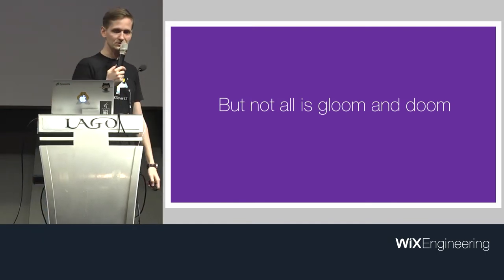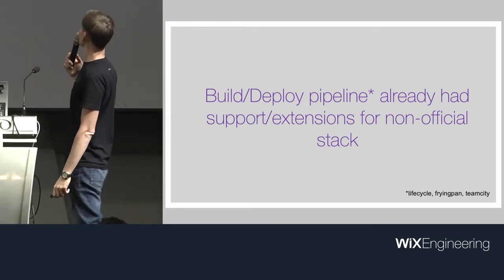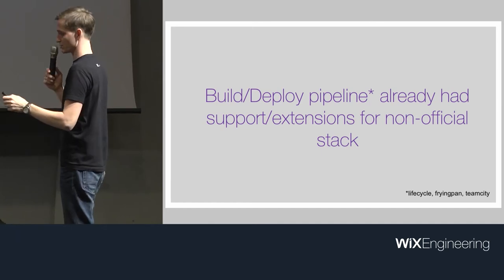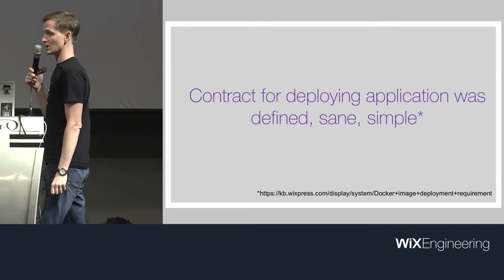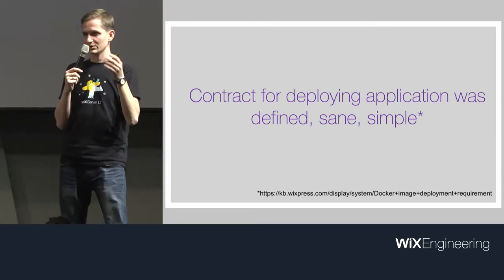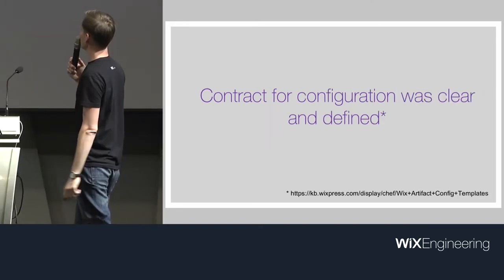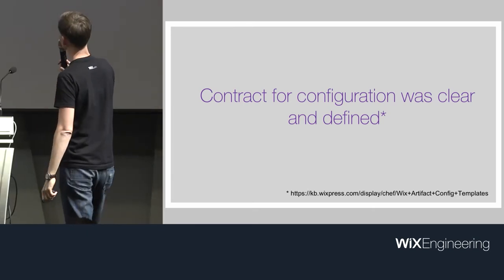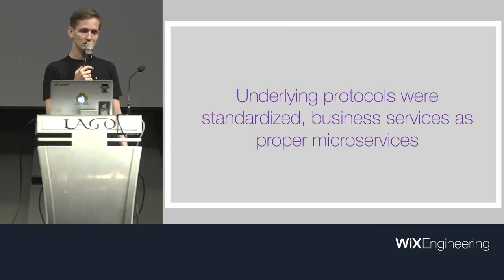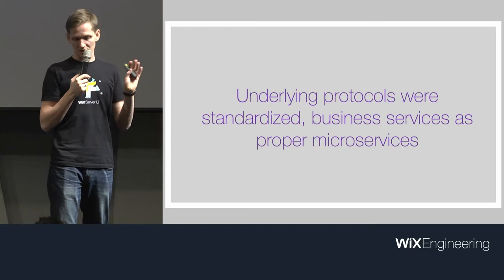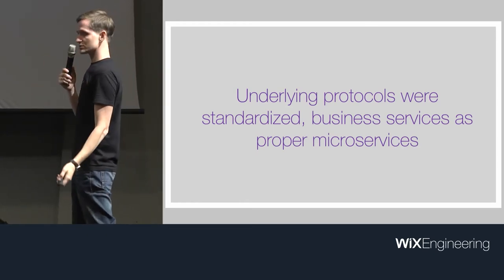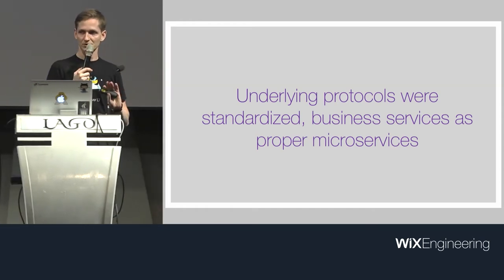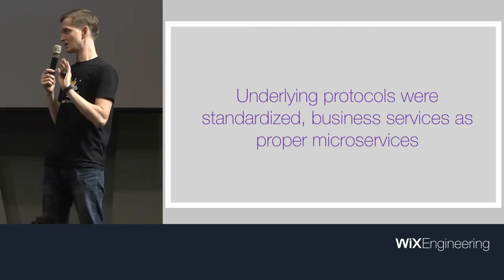Not everything was hard or bad. The build-deploy pipeline already had support — running through CI and deploying was just understanding how it works, and the deployment contract was nice: there was a wiki page with like five environment variables and you're done. Configuration was the same with ERBs — not amazing but easy to reimplement. The underlying protocols were standardized: JSON-RPC 2 without any Wix customizations except for headers, and our microservices don't really leak any JVM-specific data types — that part was nice and clean.